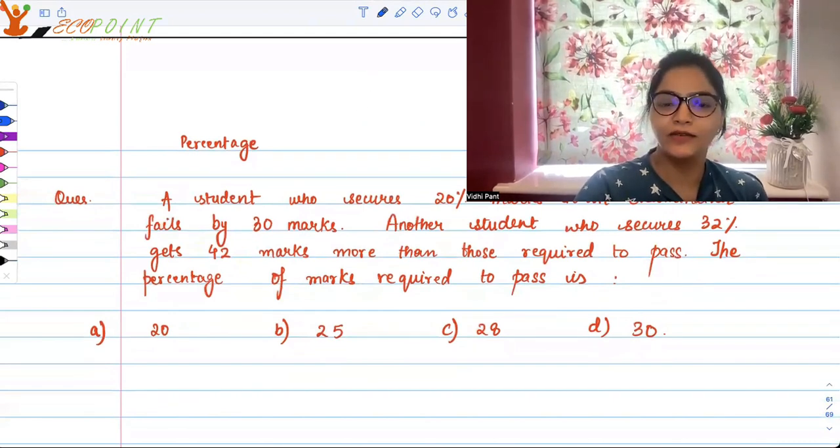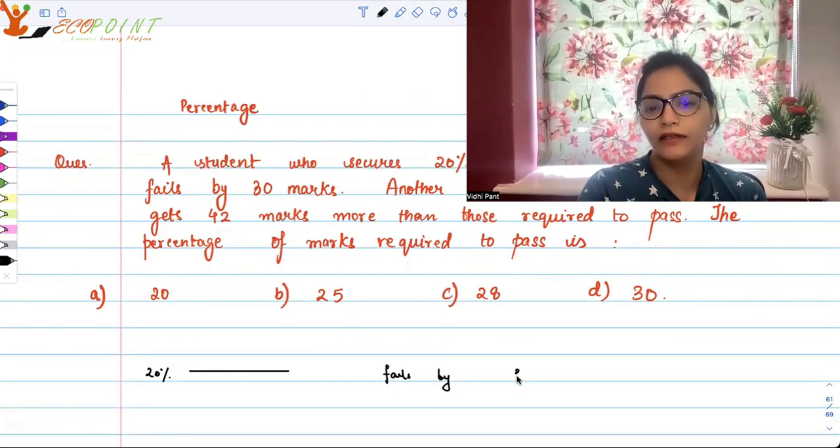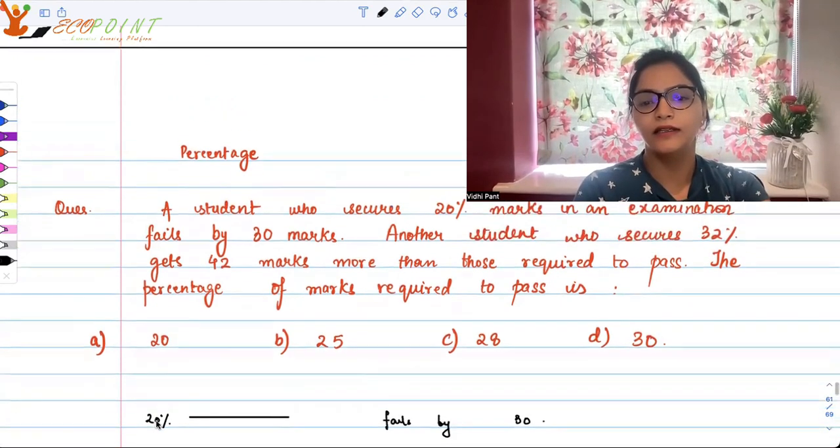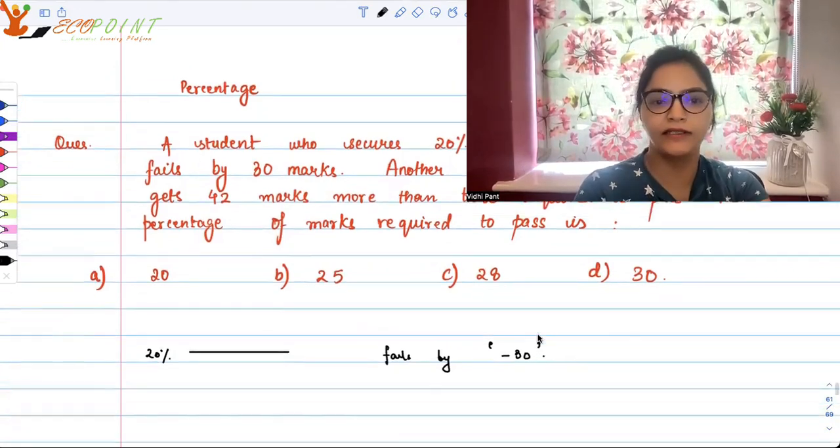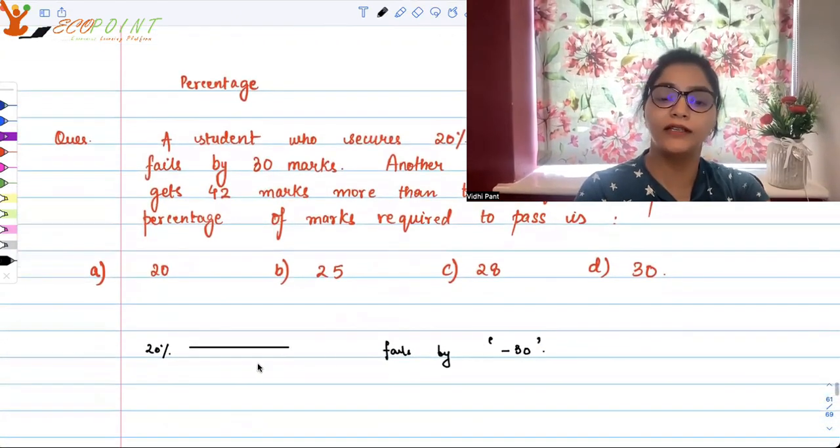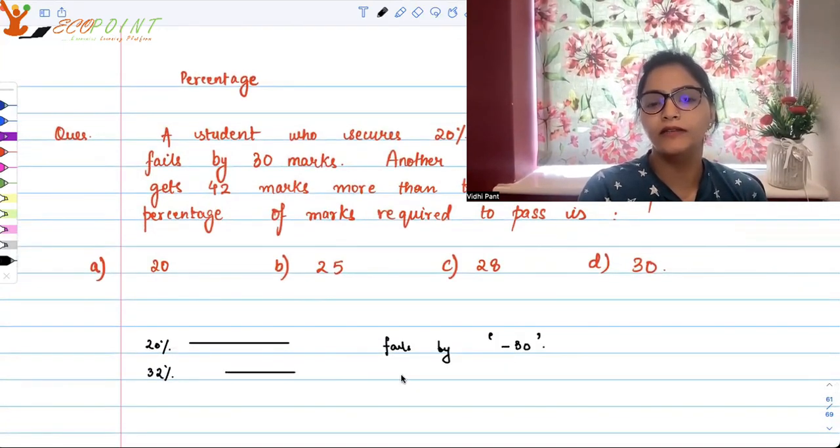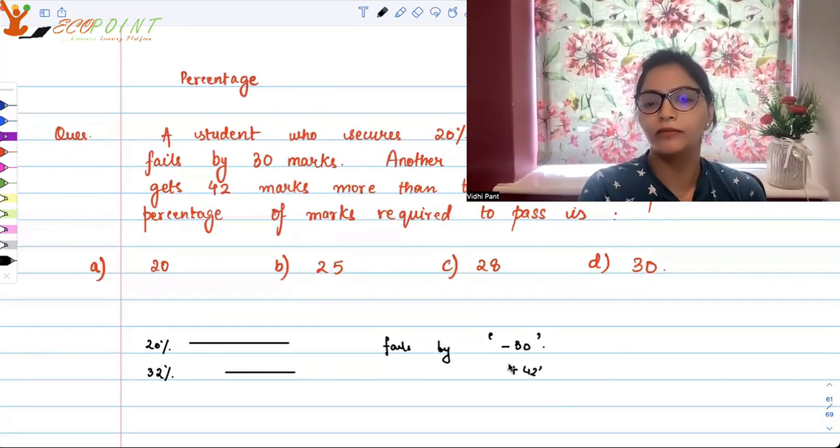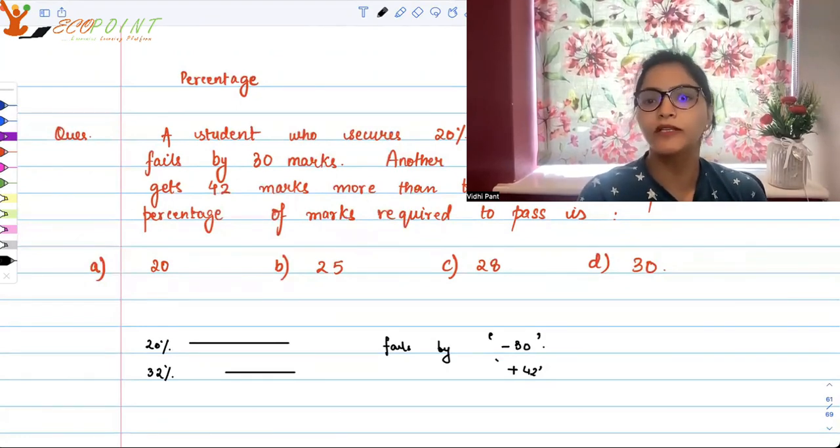Let's see the given information. One person got 20 percent marks and fails by 30 marks. That means 30 marks less than passing marks, basically. Another person has 42 marks more than passing marks, and this person has just got 32 percent marks. He's got 42 marks more than what is required to pass.